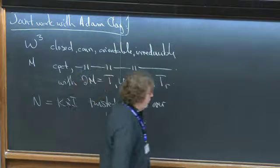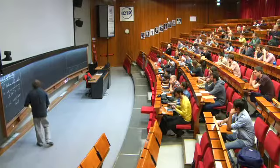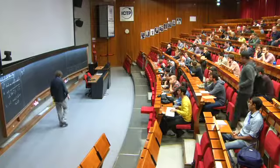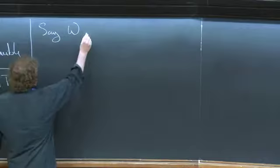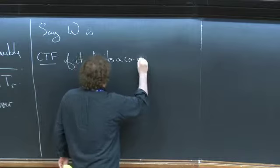Okay, so the three key players here are different properties, three different properties that you can put on a three-manifold. They're quite different on the face of it. So let's define them. I'm going to say, and Josh Green gave a mini course last week on these things, so we're going to say W is TTF if it admits a co-oriented taut foliation.